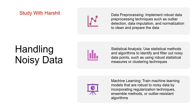Handling noisy data — Number 1: Data pre-processing. Implement robust data pre-processing techniques such as outlier detection, data imputation and normalization to clean and prepare the data. इसमें हम implement करेंगे एक robust data pre-processing technique, जैसे की outlier detection, data imputation and normalization, जिससे data clean हो सके और prepare हो सके.